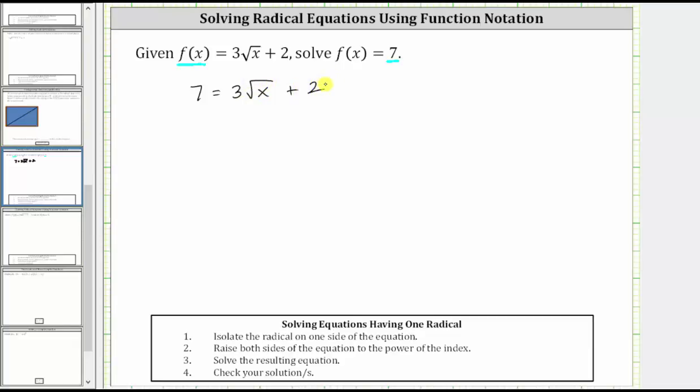To solve the square root equation, we first isolate the square root, and therefore the first step is to subtract two on both sides. Simplifying, on the left, seven minus two is five, we have five equals. On the right, two minus two is zero, and therefore on the right side we just have three square root of x.